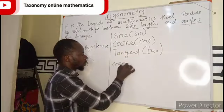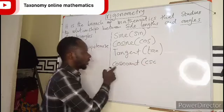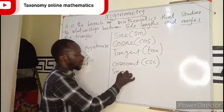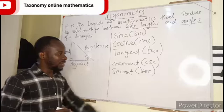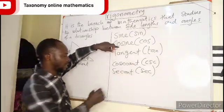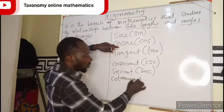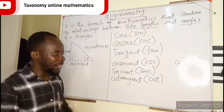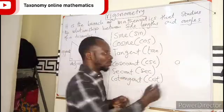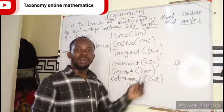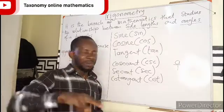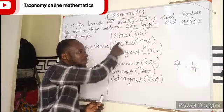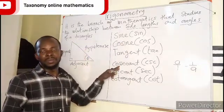We have cosecant, which is the reciprocal of sine. Then I have secant, which is the reciprocal of cosine. Then I have cotangent, which is called cot. We know reciprocal simply means, if I have A, if I'm asked to find the reciprocal of A, we know every number has one as its denominator. If I'm asked to find the reciprocal, meaning I'm to flip the fraction, let the one go up and let the A come down. If I have sine and I'm asked to find the reciprocal, meaning I'm flipping it to get cosecant.